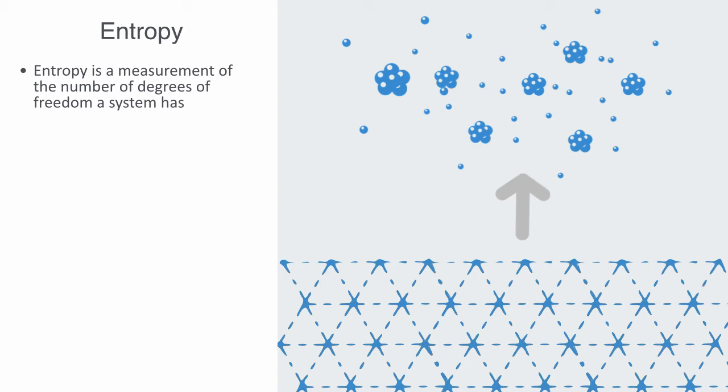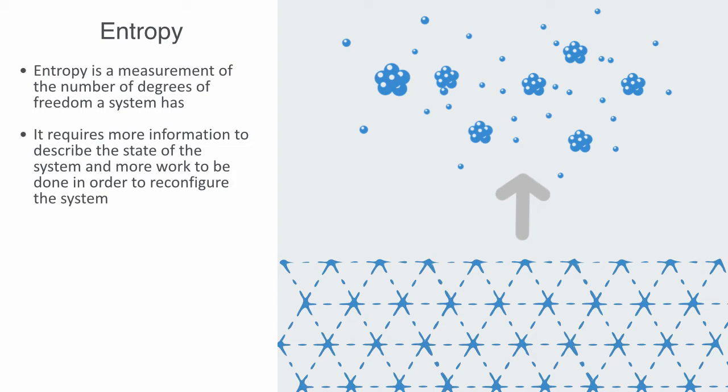When the entropy goes up, it requires more information to describe the state of the system, and it would require more work to be done in order to reconfigure the system into its original ordered state. As such, entropy is a key measurement in information theory, where it quantifies the uncertainty involved in predicting the value of a random variable.